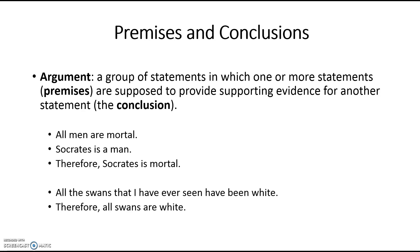For example, here's one argument: All men are mortal. Socrates is a man. Therefore, Socrates is mortal. The first two statements are premises, and the conclusion is signaled by 'therefore.' The premises give support to the conclusion. Here's another kind of argument: All the swans that I've ever seen have been white. Therefore, all swans are white. In this case, there's just one premise which supports the conclusion. We'll look at both these kinds of arguments later on.